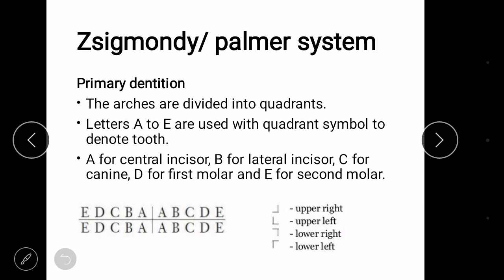Now for primary dentition, we use alphabets A to E where A represents central incisor, B lateral incisor, C canine, D first molar, and E represents second molar. These are written in this format.